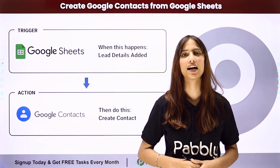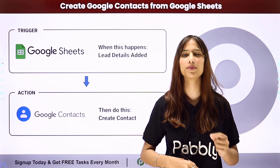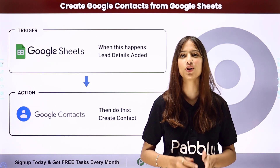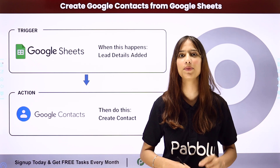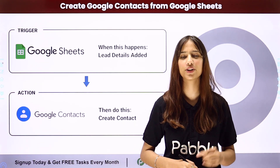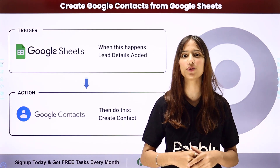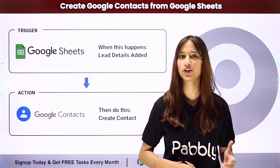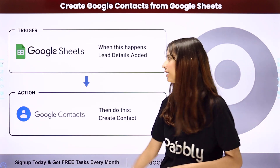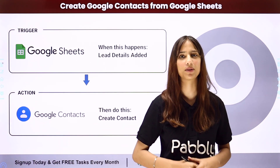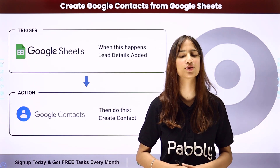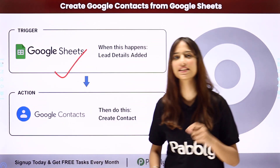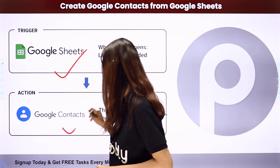Let's suppose that your team is getting you leads for your business from different sources and you are maintaining the lead details in a Google Sheet. Your objective is that whenever a new lead detail is added in your Google Sheet in a new row, then automatically by using the lead details a contact should be created in Google Contacts. To do this you need to build an integration using Pabbly Connect, where the trigger application will be Google Sheets and the action application will be Google Contacts.